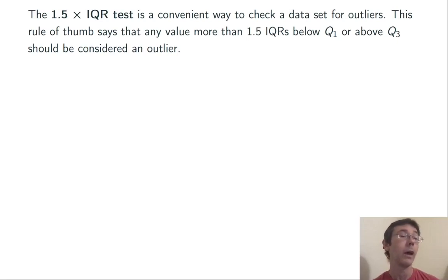The 1.5 times IQR test is a convenient way to check a data set for outliers. This rule of thumb says that any value more than 1.5 IQRs below Q1 or above Q3 should be considered an outlier.